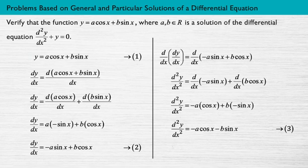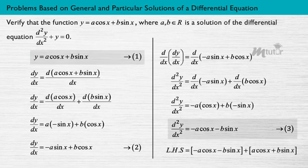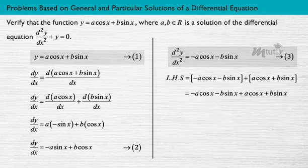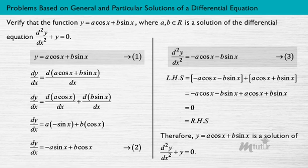Next, substitute the values of the second derivative and y in the left-hand side of the given differential equation. Simplifying the terms, we can say that the left-hand side of the given equation is equal to the right-hand side. Therefore, the given function y = A·cos(x) + B·sin(x) is a solution of the given differential equation.